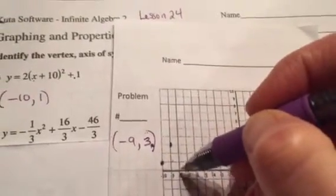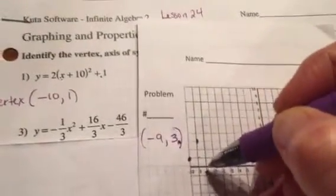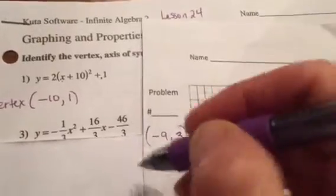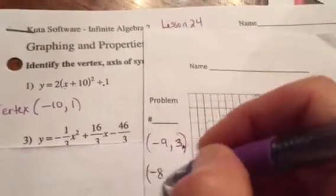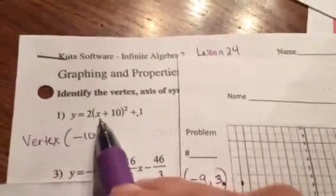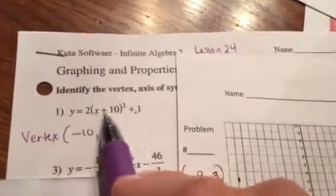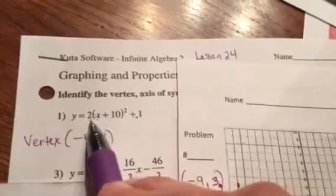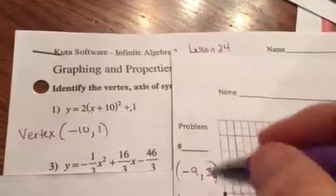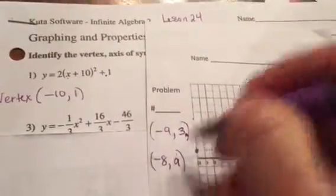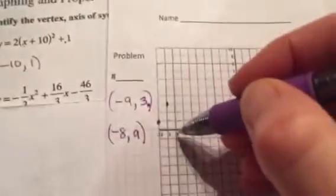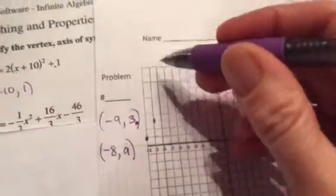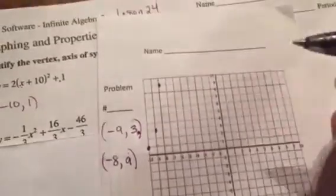If you plug in negative nine, I'm going to add 10 and I get one. One squared is one times two is two. Two plus one is three. So I've got this point right here. Negative nine, three. One, two, three. Right there. So notice how that's over one and then up two. I know this is going to be the mirror image, so I know I'll have another point right there.